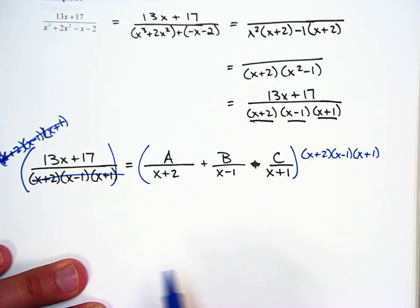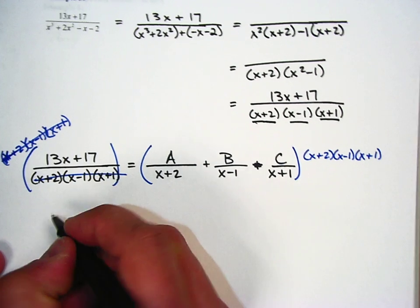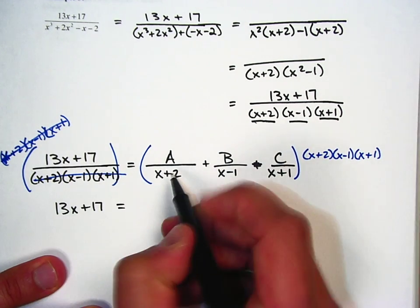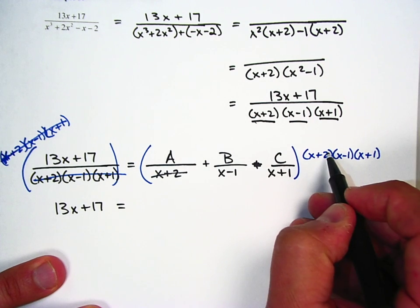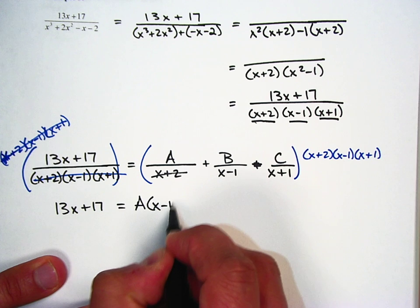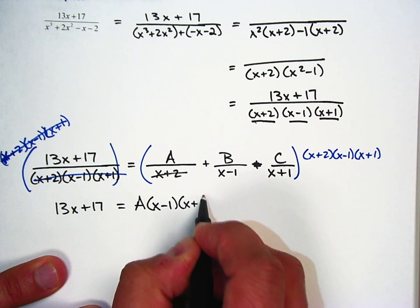The entire left side cancels out. That's pretty easy. That leaves me with 13x plus 17. This x plus 2 would cancel with that x plus 2, and that would leave me with A times x minus 1, x plus 1.